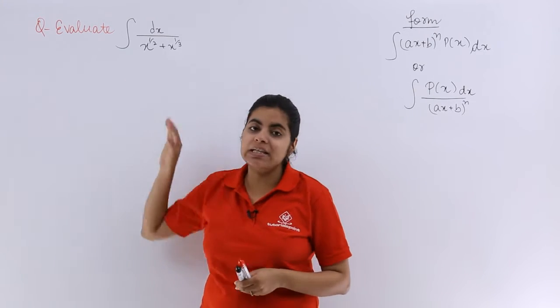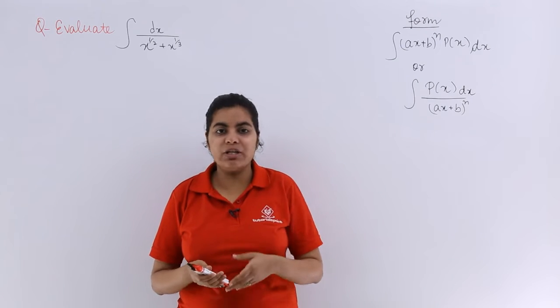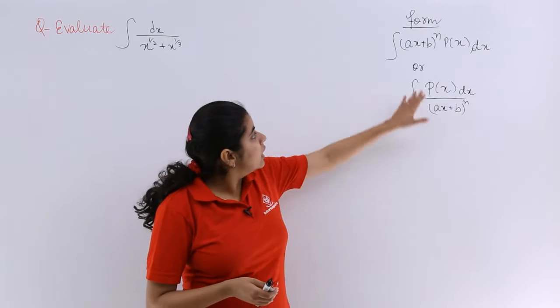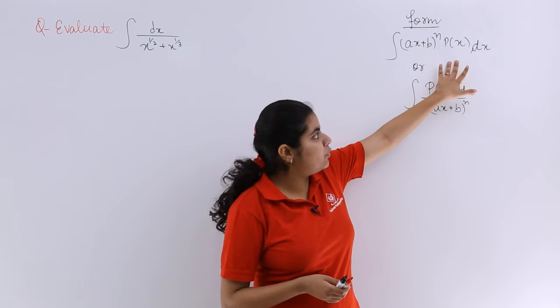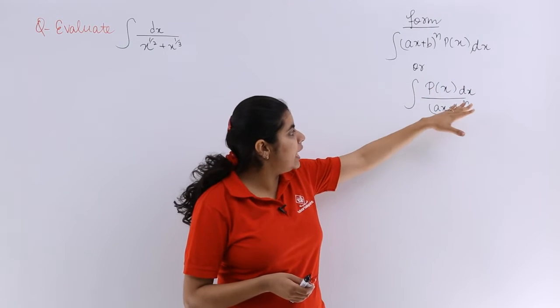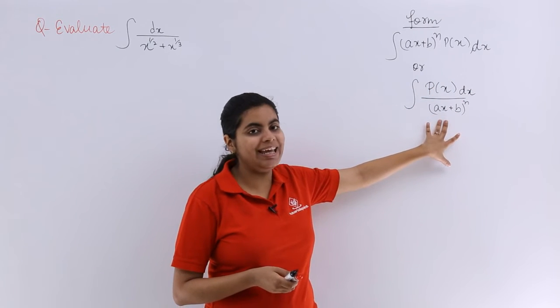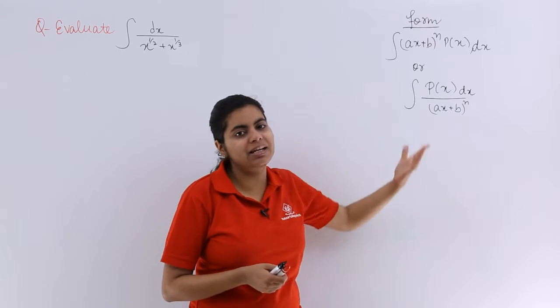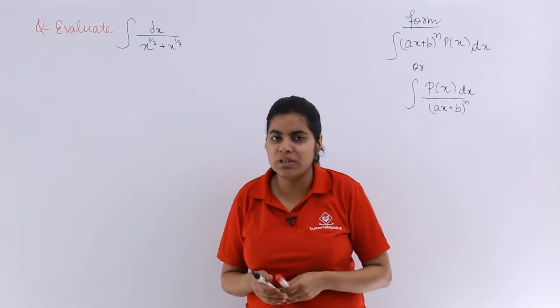This question is in your NCERT books too. The form is: integral of P(x) dx upon (ax + b) whole raise to the power n, or integral of (ax + b) whole raise to the power n times P(x) dx. That is the form that you can easily compute and understand.